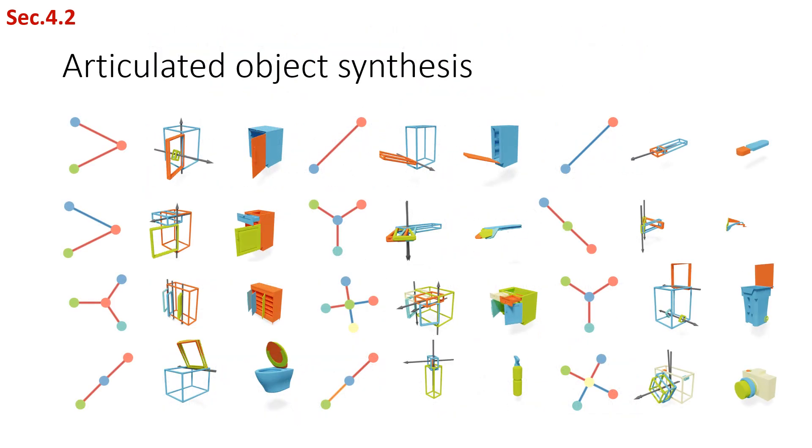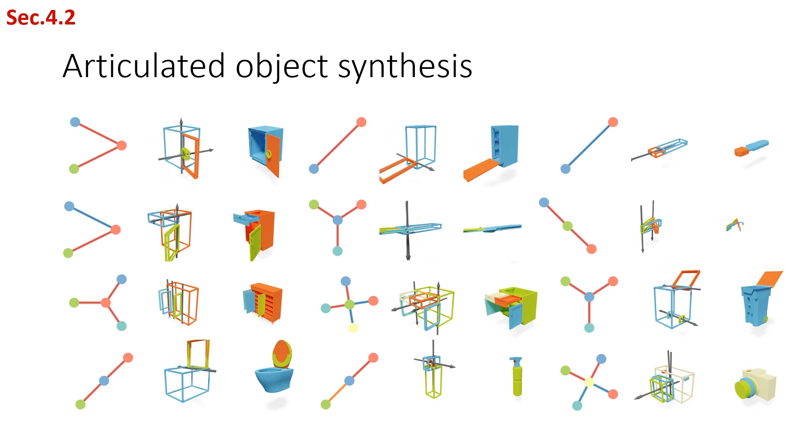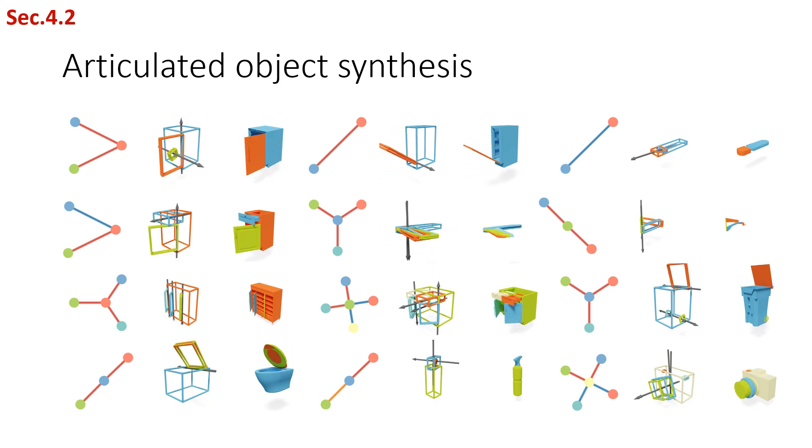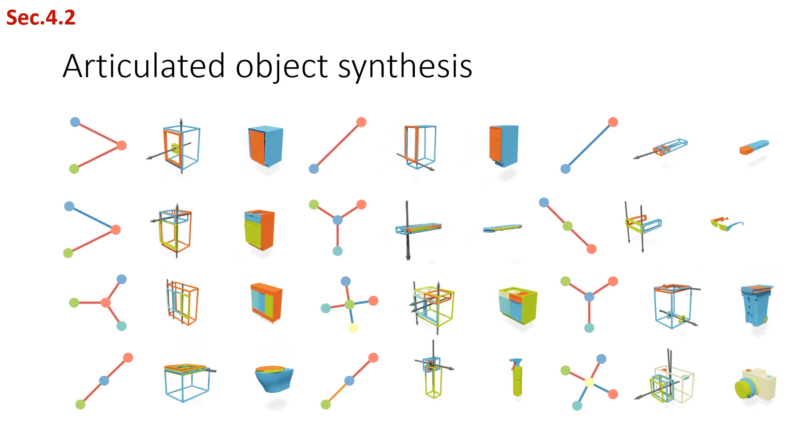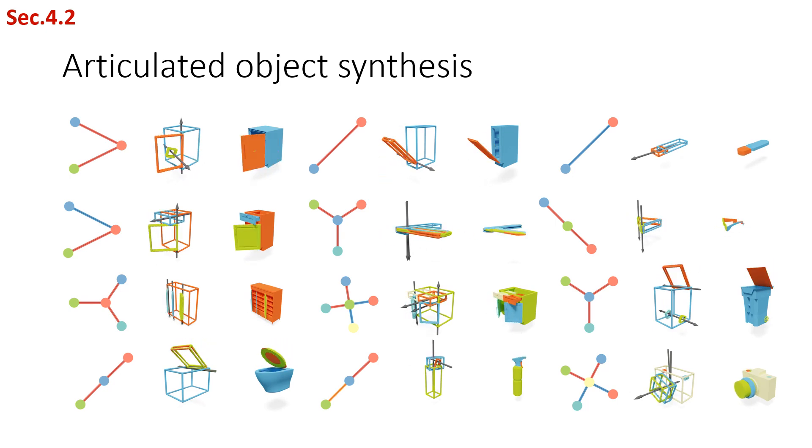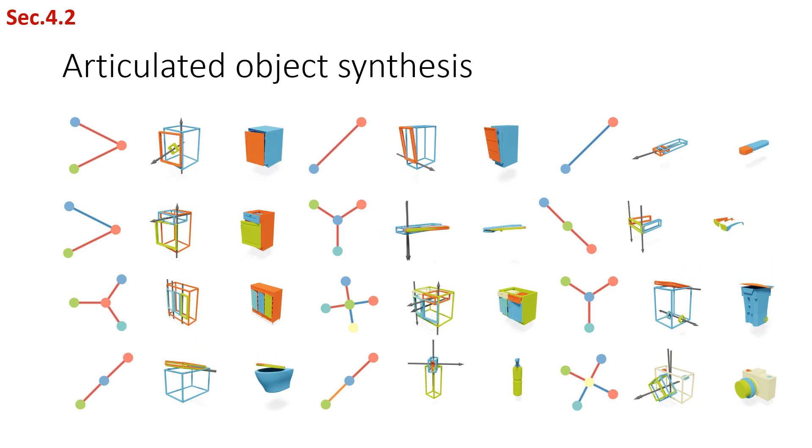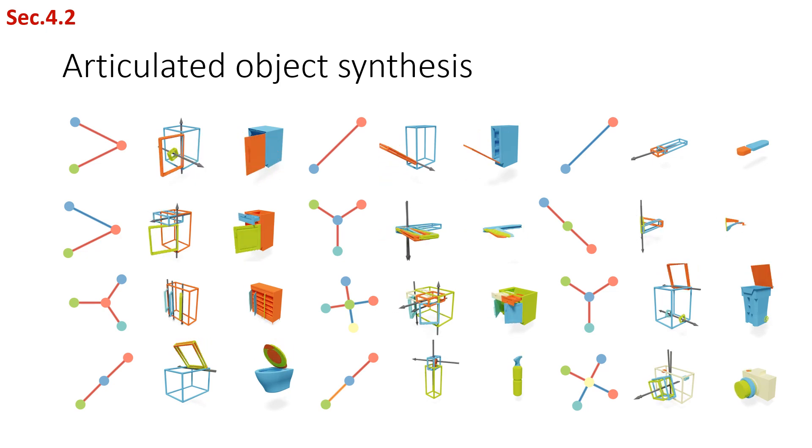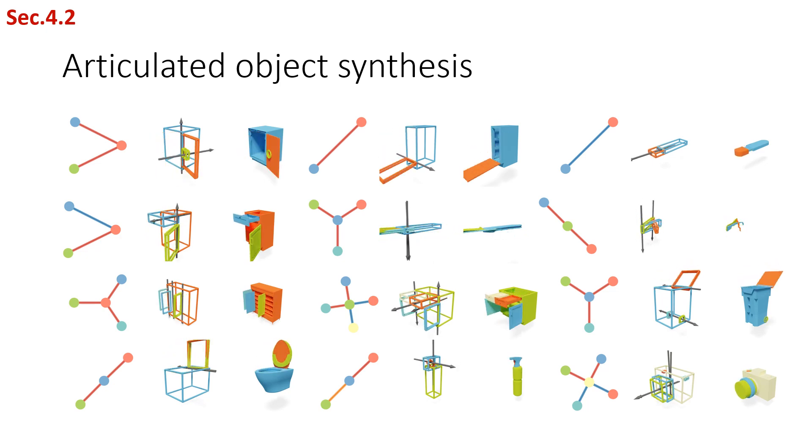Now we show our main results on unconditioned articulated object generation. The generated tree topology is shown on the left, where the edge color means blue prismatic, red revolute, and orange hybrid. The generated bounding boxes and joints are shown in the middle, and the retrieved part shapes are shown on the right.